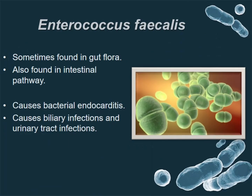Starting with Enterococcus faecalis. This spherical-shaped species can be found in the gut and intestinal pathway. Exposure to this bacteria can cause endocarditis, and they are also responsible for urinary tract infection.